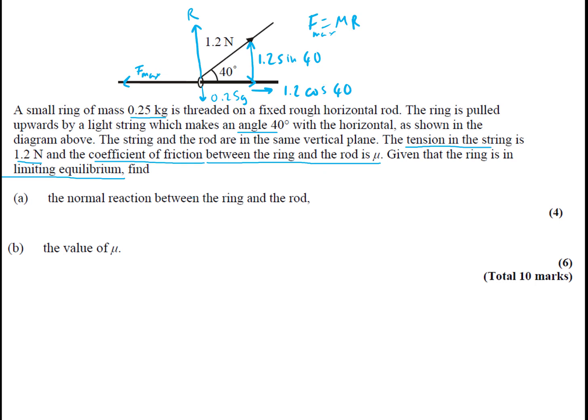So let's find the normal reaction, so up and down. We're going to get R plus, we can see what else is going up, plus 1.2 sine 40 is going to equal the total weight going down, which is 0.25g. So let's just solve that. We're going to get R equals 1.7 newtons. Wonderful.